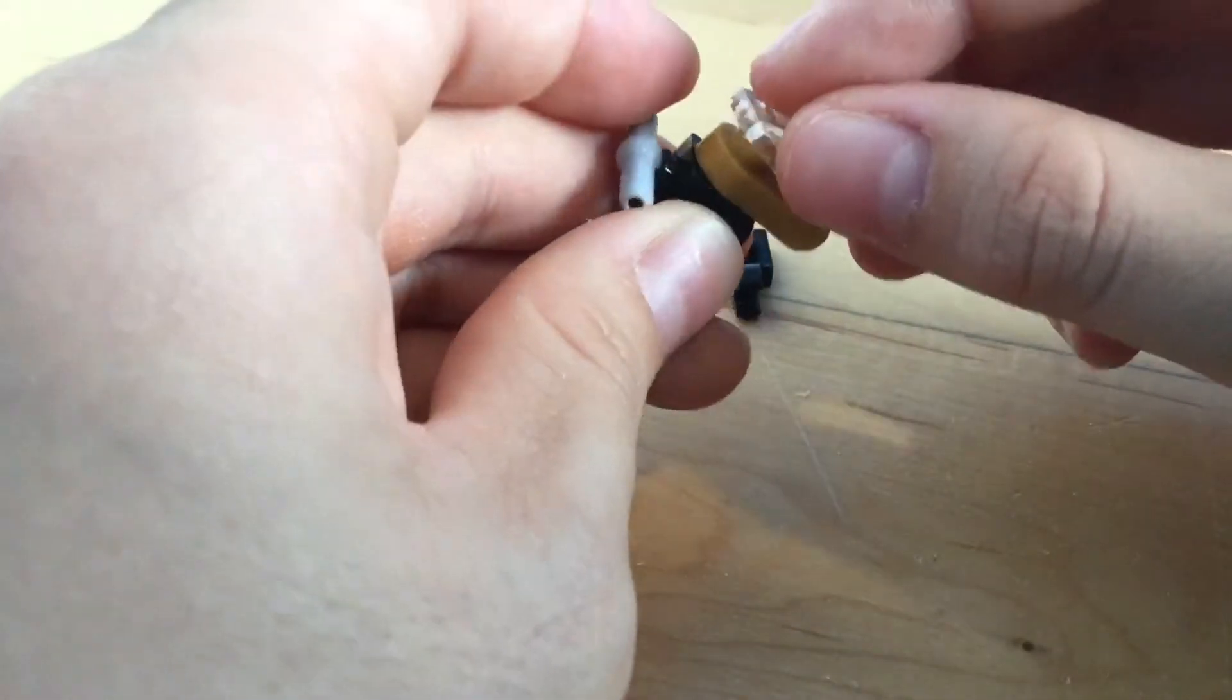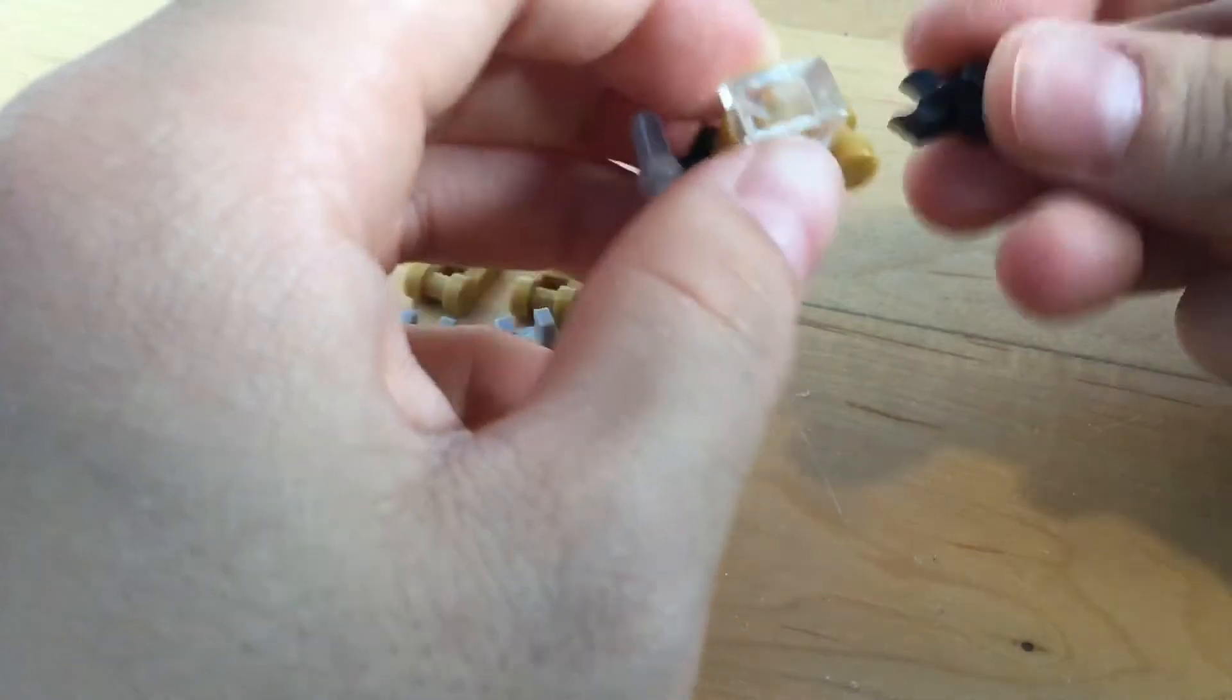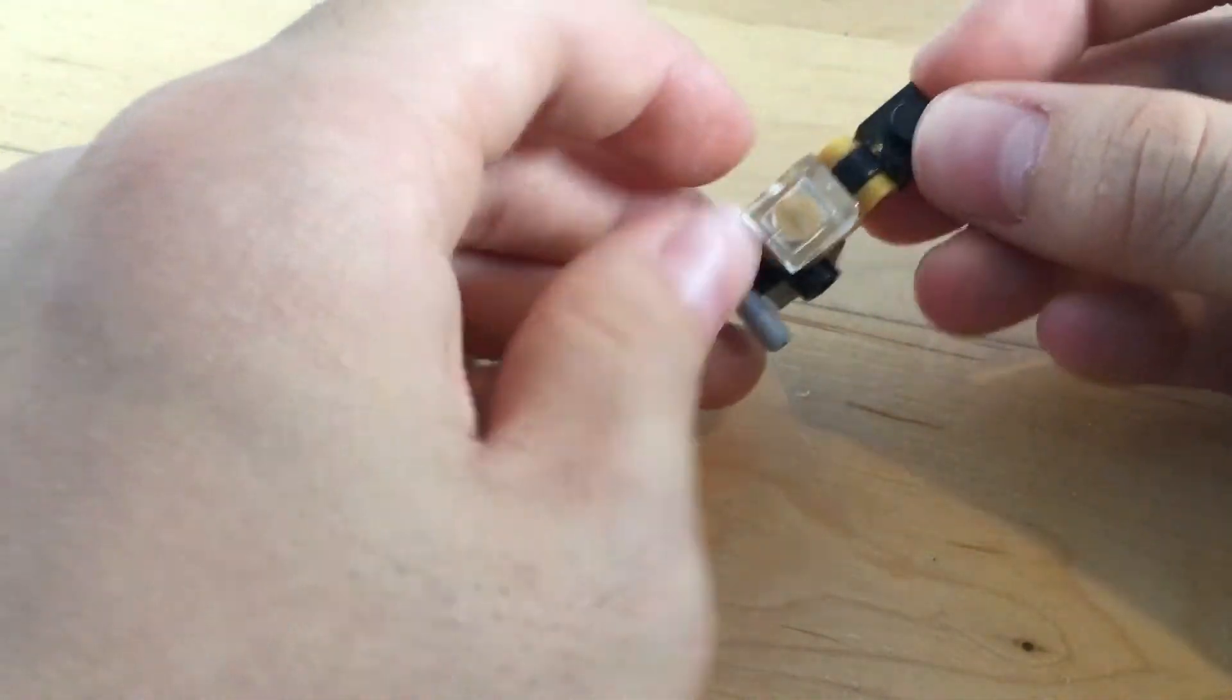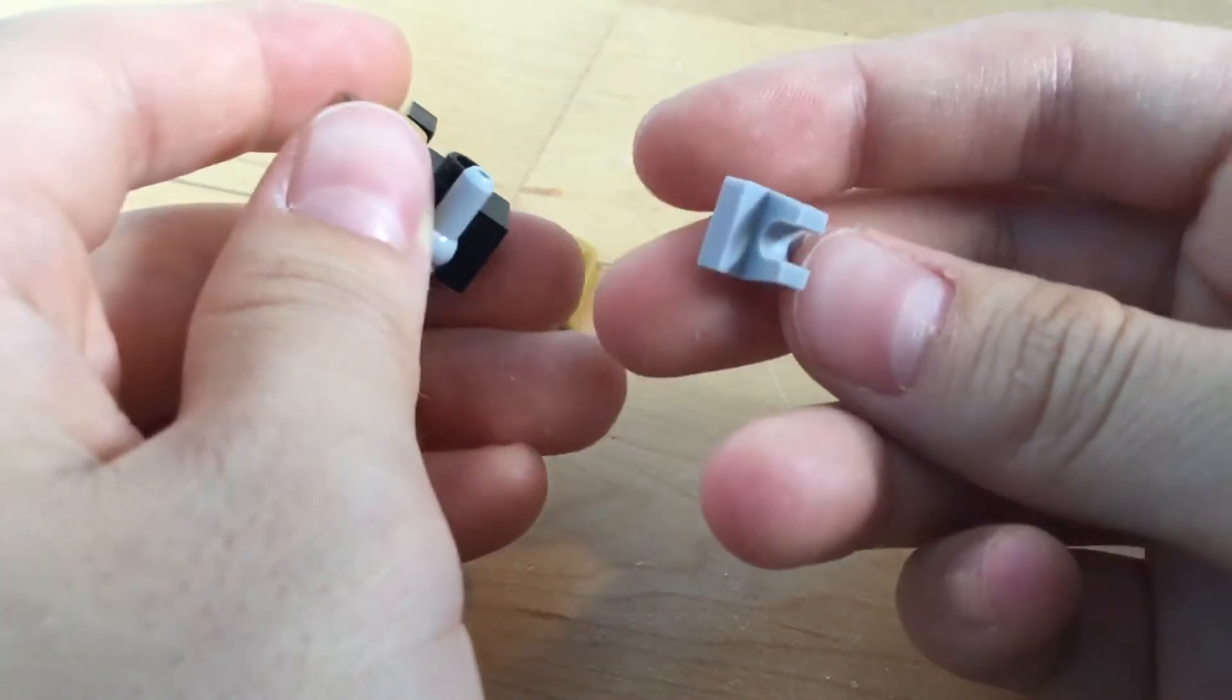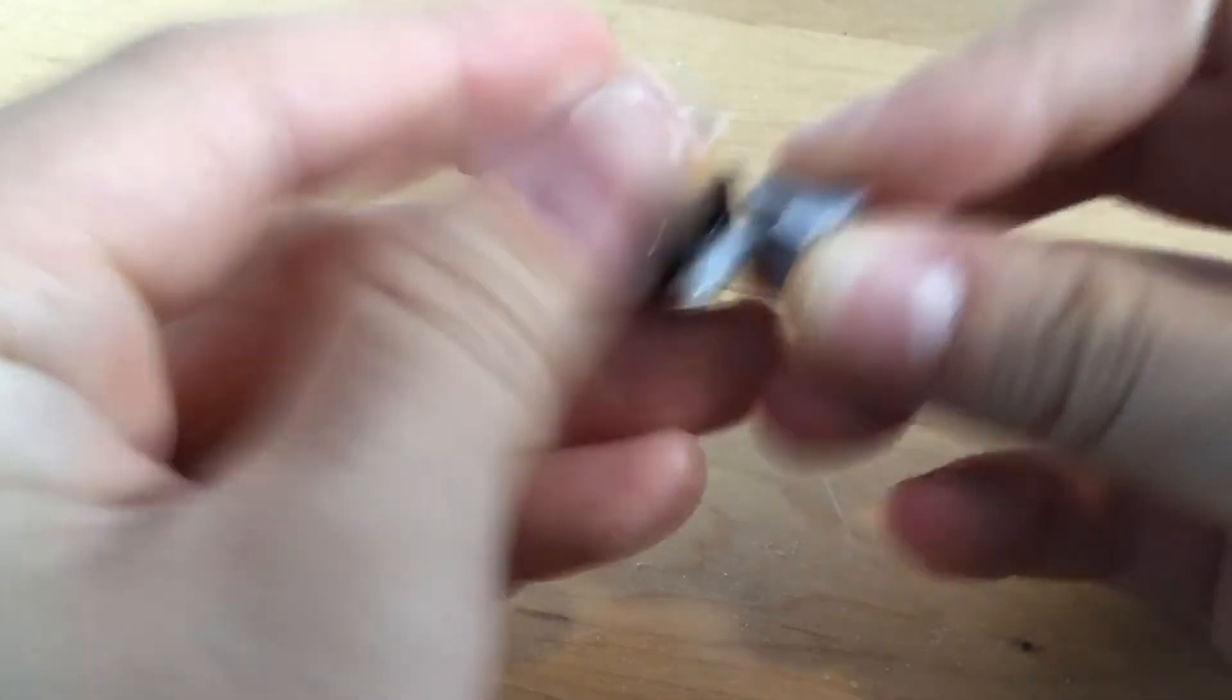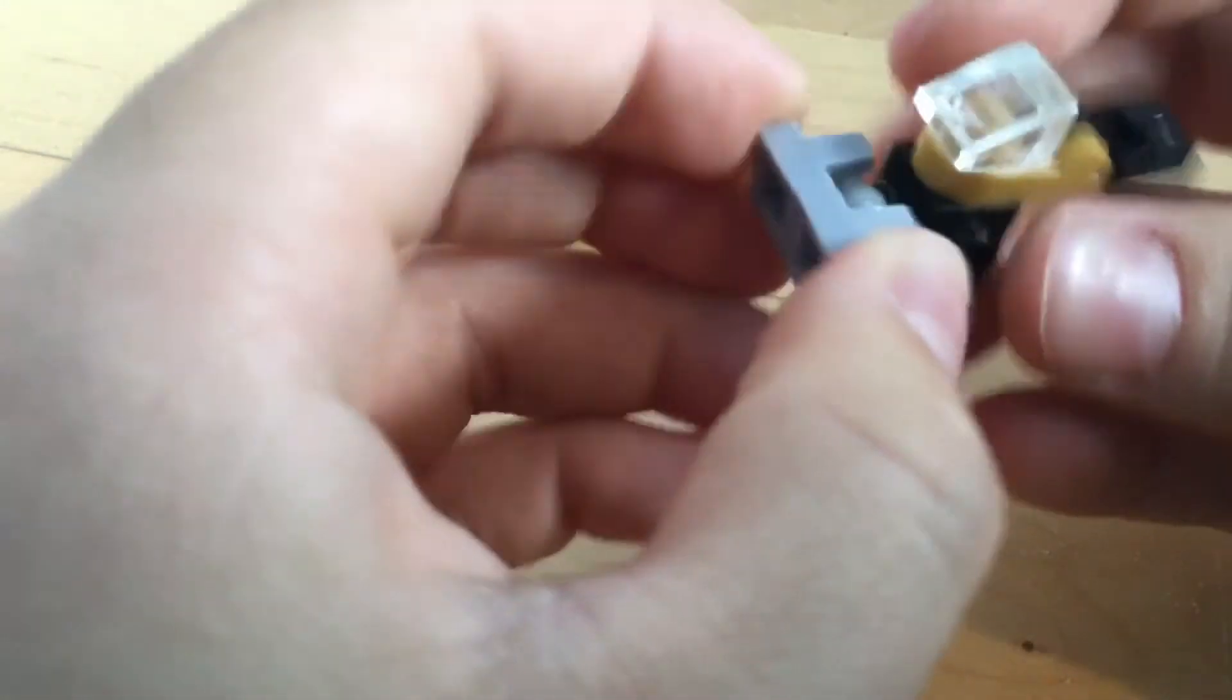Grab a clear cheese slope for the windshield, just place it right there, and grab a one by one clip right here. So then, yeah, after that grab a one by one clip like that and just clip it onto the T joint.